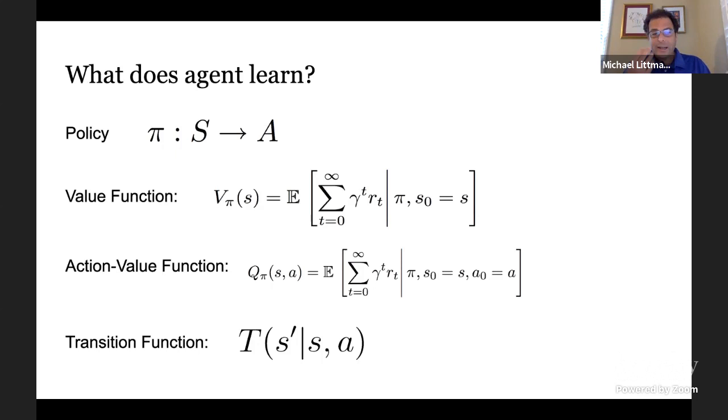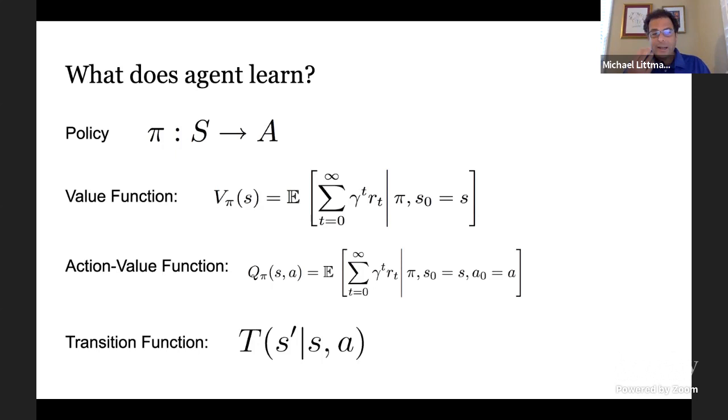And the fundamental quantities that we tend to talk about are things like the policy that maps states to actions, the value function with respect to a policy which says, if I start in this state and follow the policy, what's my future expected discounted reward going to be? The action value function or the Q function, in this case with respect to a policy, which is the same thing except possibly I'm going to take a specific action A first before embarking on policy pi. And, of course, the transition function.